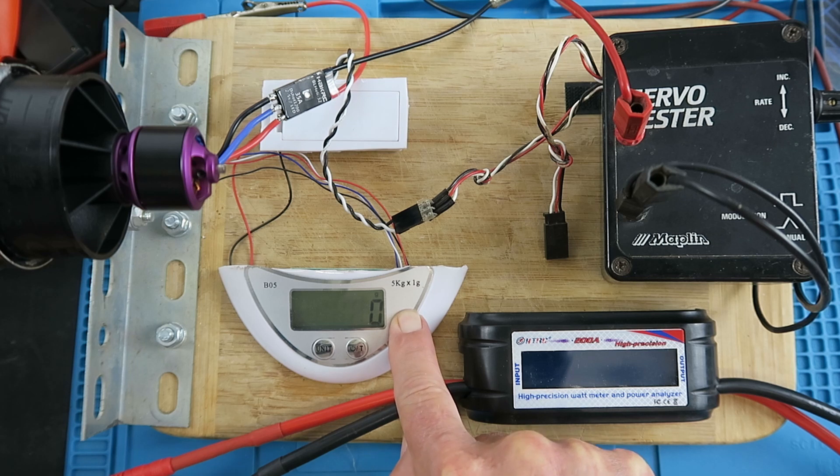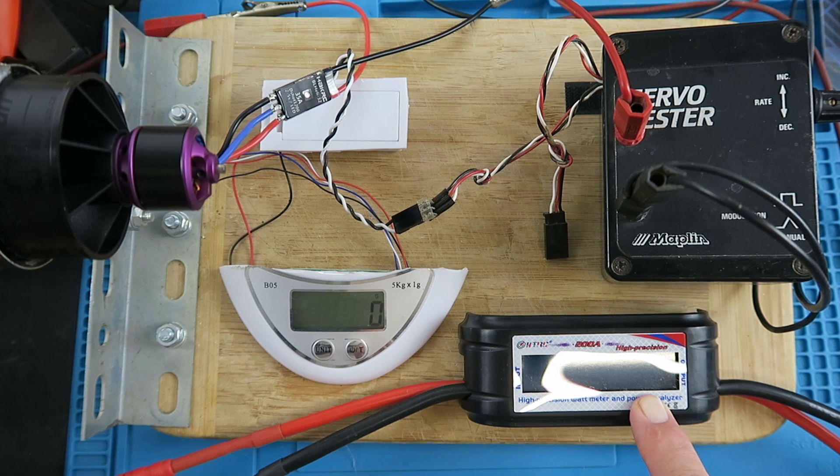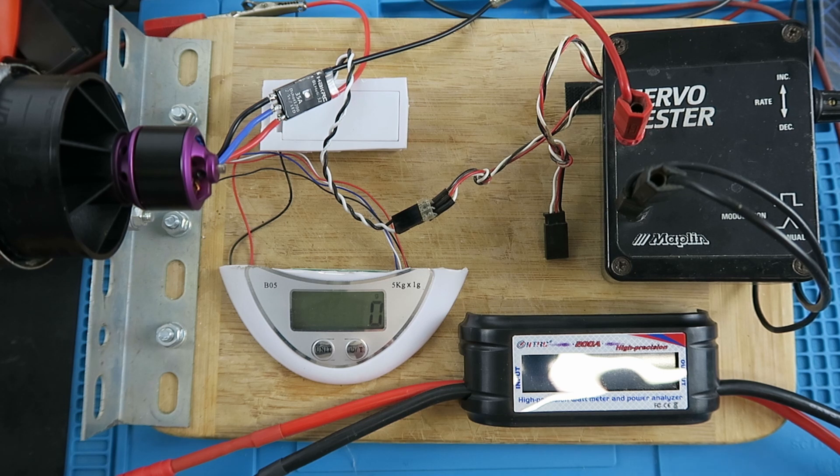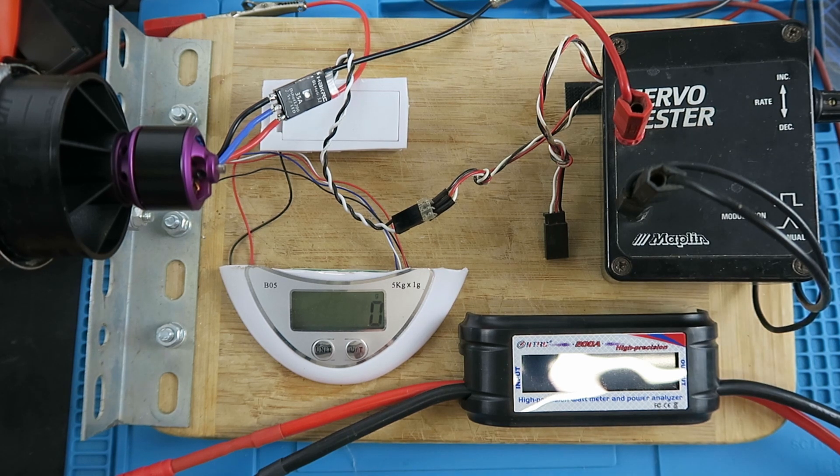So the only thing I have to keep an eye on is the amount of grams thrust indicated, and then I can go back and look on the meter here to see the power. With those two numbers we can make a stab at the efficiency. So I'm going to take two readings - the first reading will be around 50% throttle and the second reading will be around 100% throttle.